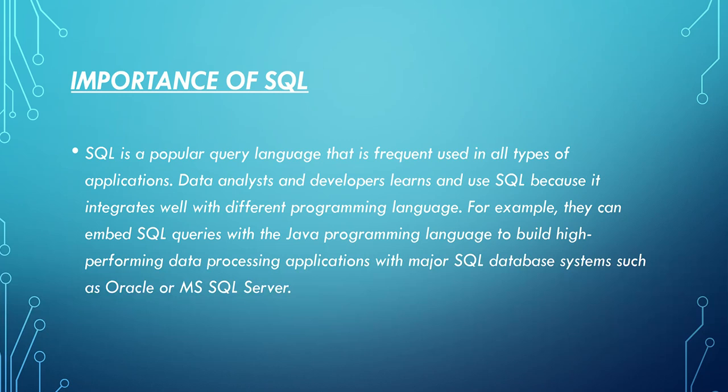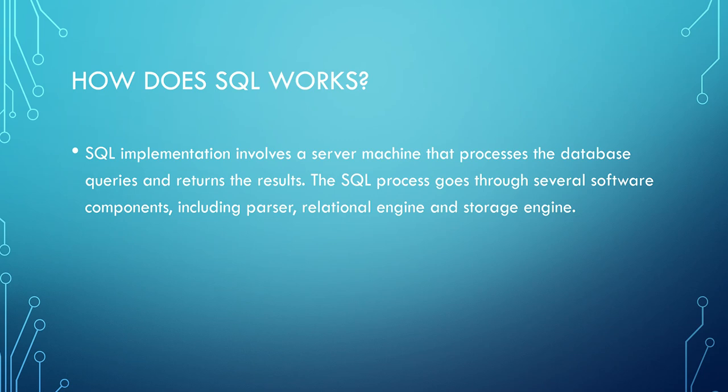A relational database management system utilizes SQL for data storage and management. This type of system has multiple interconnected database tables. Examples of relational database management systems include MySQL Server, MySQL, and MS Access. So how does SQL work?